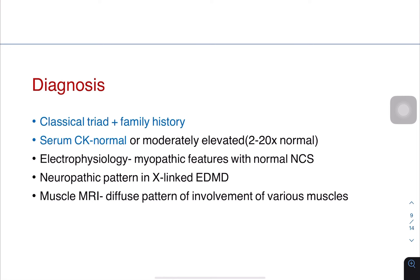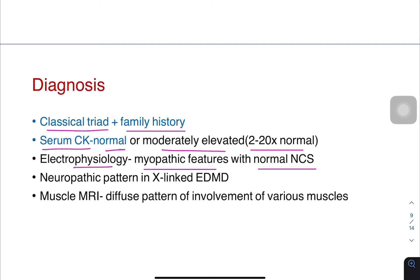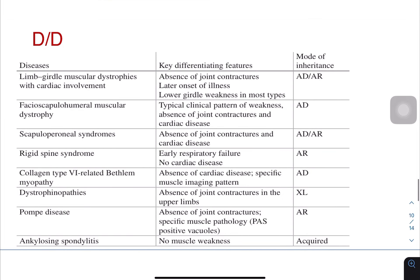For diagnosis, the classical triad plus family history are key. CPK level is usually normal or moderately elevated 2 to 20 times. Electrophysiology usually shows myopathic features with normal nerve conduction, though neuropathic features may be seen in X-linked EDMD. Muscle MRI shows a diffuse pattern of involvement of various muscles.